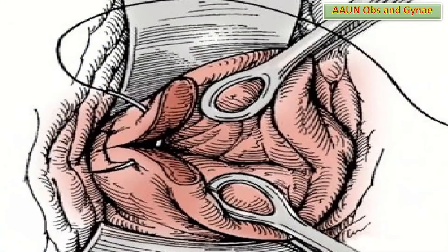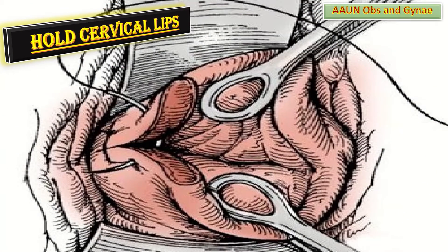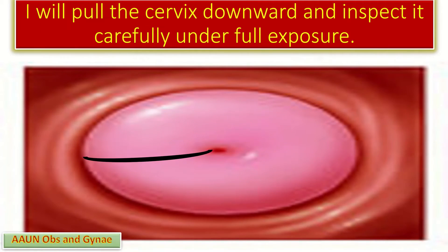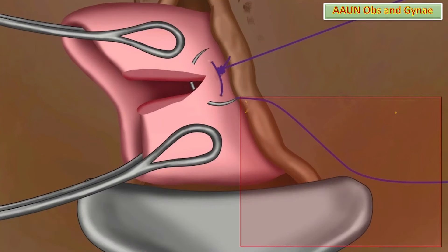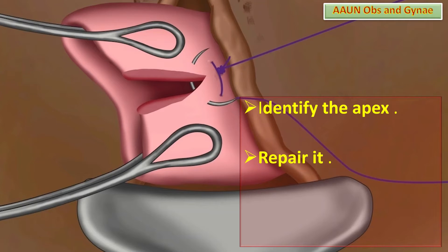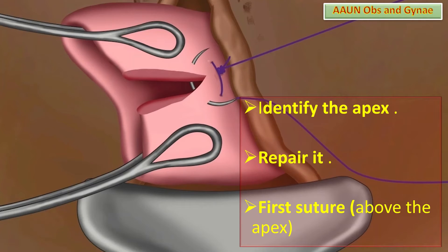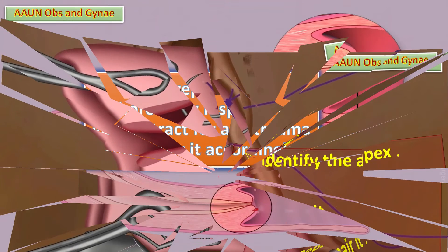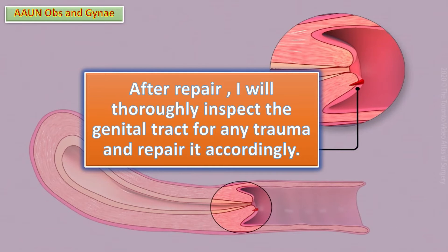I will hold the anterior and posterior cervical lips with sponge-holding forceps, pull the cervix downward, and inspect it carefully under full exposure. I will identify the apex of the tear and repair it with catgut number one in an interrupted pattern, placing the first suture well above the apex. I will complete the repair by taking interrupted stitches till the end of the tear, depending on the type and extent of the tear, and tying a knot at the end.